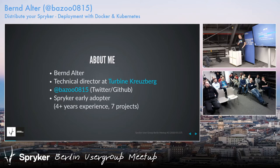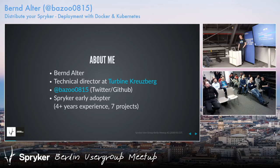My name is Bernd Alter, I'm a Technical Director at Turbine. You can find me on Twitter or GitHub as bazoo08515. I call myself a Spryker Early Adopter — we've been working with Spryker basically from the very beginning. We launched the very first project with Spryker, which was a marketplace for Switzerland, even before the first official version. I've personally worked in seven projects with Spryker.